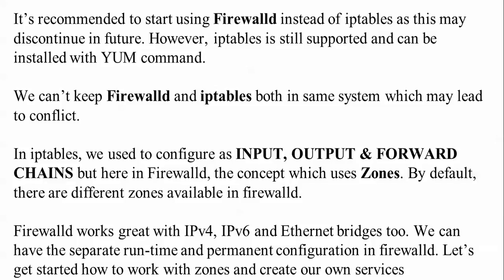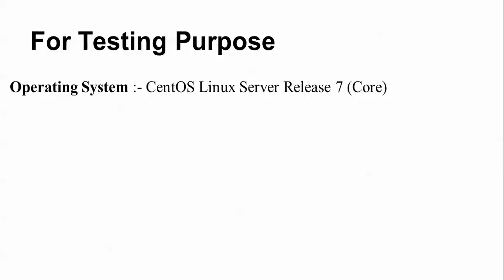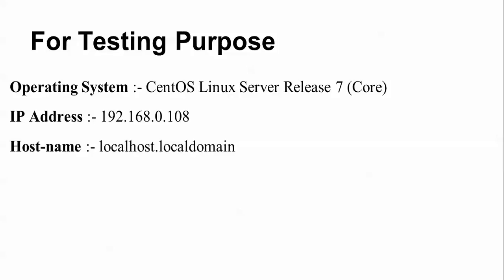Let us begin to configure zones and create our own services. First, for testing purposes, my configuration is: OS is CentOS Linux Server 7, IP address is 192.168.0.108, and hostname is localhost.localdomain. This is my testing environment.